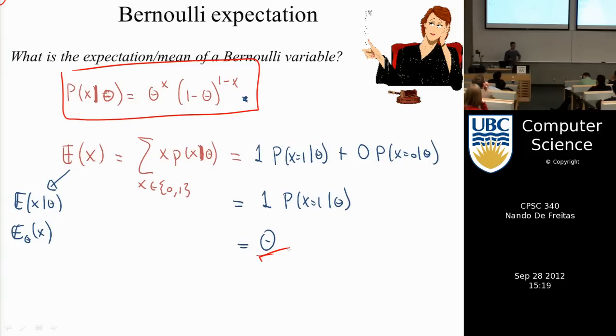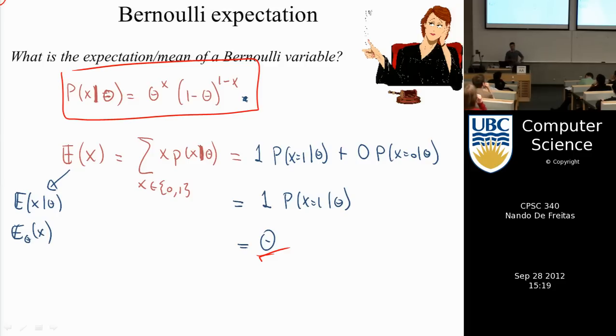The expectation is the probability of x being equal to 1. If the variable x is rain, the expectation of rain is the same as the probability of rain.